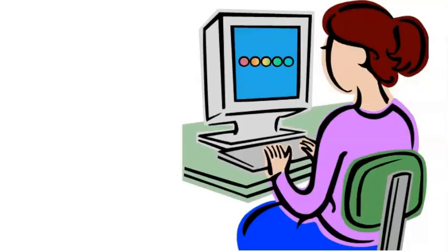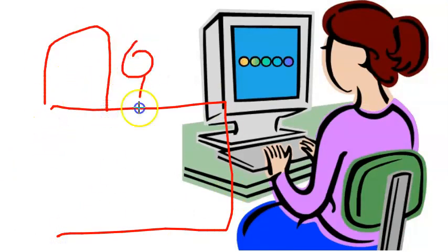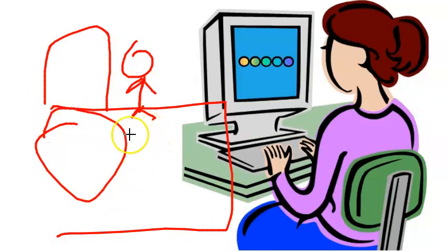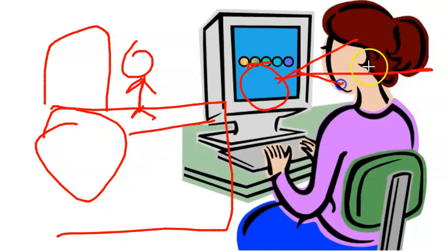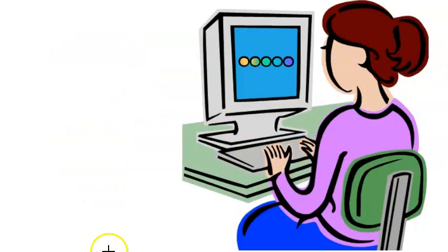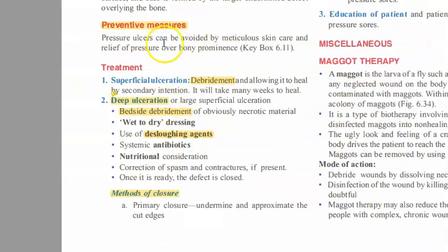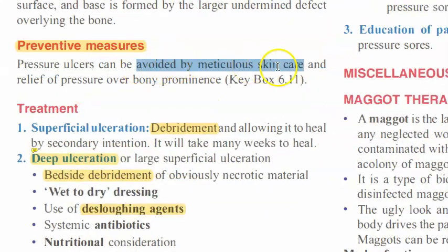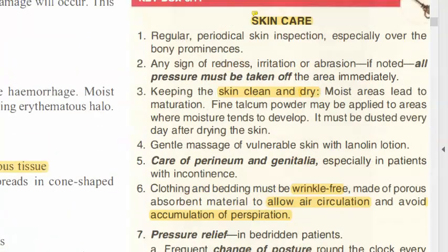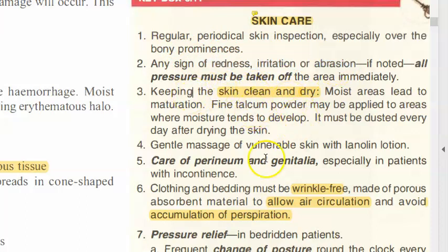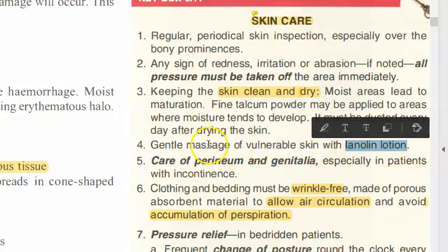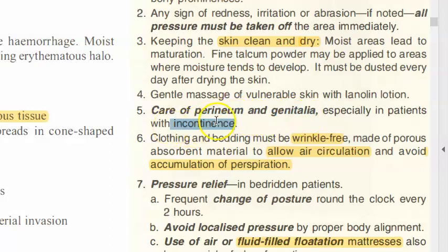For prevention: wheelchair patients should lift themselves every 10 minutes for 10 seconds, and bedridden patients should change position every two hours. Prevention also involves meticulous skin care and relief of pressure over bony prominences. Skin inspection over bony prominences should be done regularly, checking for redness, irritation, and abrasion. Pressure should be relieved, and the skin kept clean and dry.